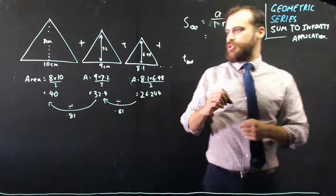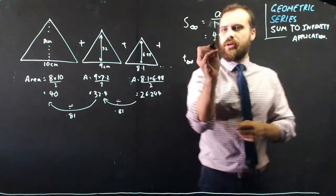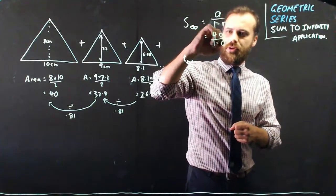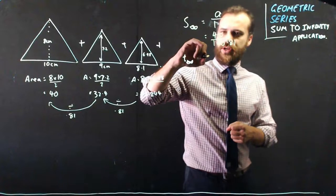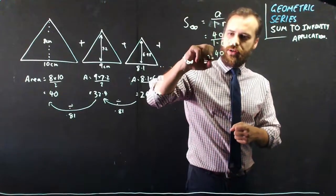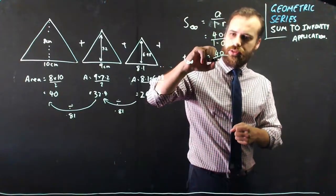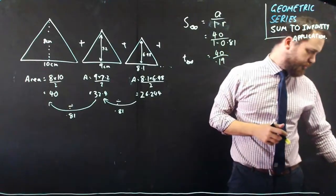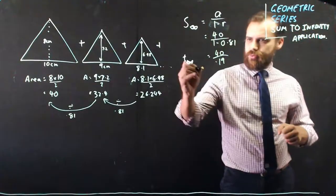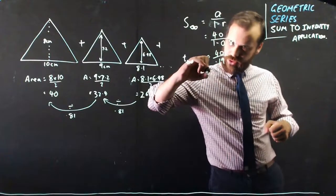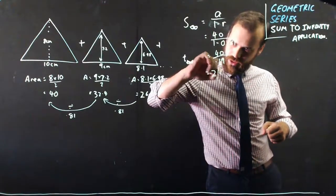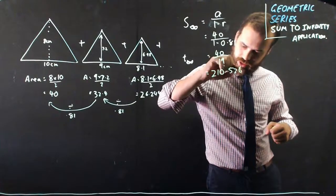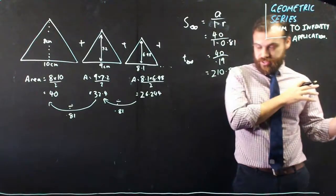The first term was 40, over 1 minus 0.81 — that's our common ratio. So that's 40 over 0.19, and the calculator gives an answer of approximately 210.526.